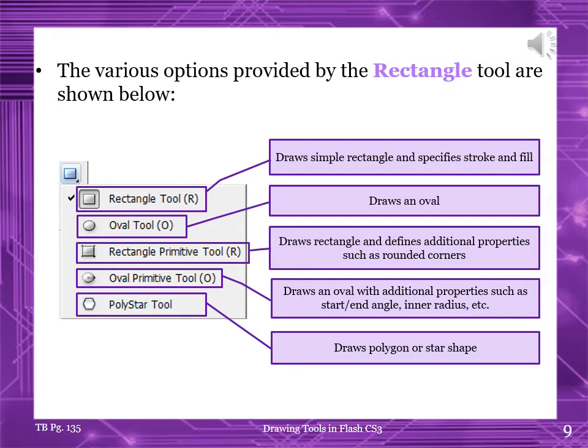When you click on the small arrow beside the rectangle tool, you will see this list: Rectangle tool (R), used to draw simple rectangles and specify strokes and fills. Oval tool (O), used to draw an oval, and even a circle as well. Rectangle primitive tool (R), used to draw rectangles and define additional properties such as rounded corners. Oval primitive tool (O), used to draw an oval with additional properties such as start angle, end angle, inner radius, etc. Polygon star tool, used to draw polygon or star shapes.